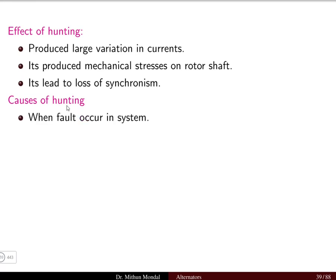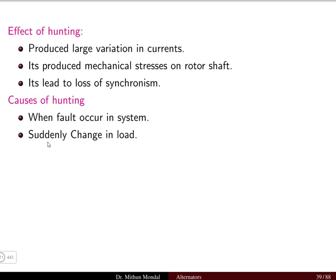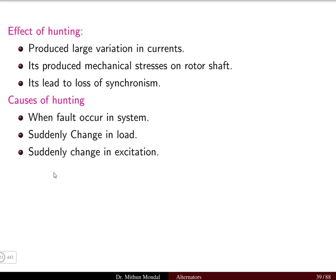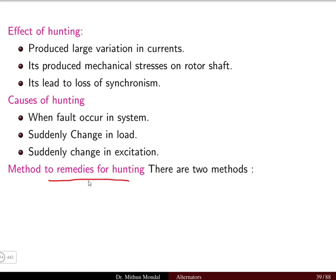The causes of hunting include sudden change in load, which we have already discussed. Other factors include faults that occur in the system, causing fluctuation in the rotor speed. Sudden change in the load causes a change in the torque angle and oscillation of the rotor. Sudden change in the excitation — due to fluctuation in the input DC supply given to the field winding — also causes the phenomenon of hunting.